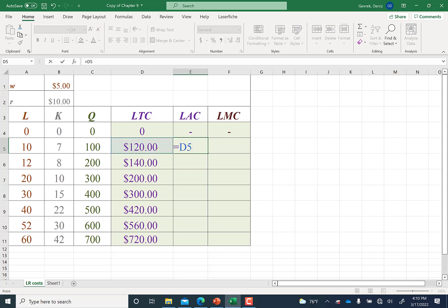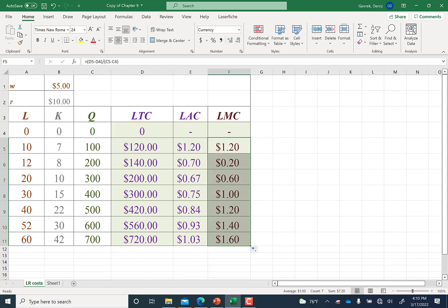Long-run average cost equals long-run total cost divided by quantity. You got this. And then long-run marginal cost: we are going to open a parenthesis, change in long-run total cost divided by change in quantity. Total cost producing 100 units minus total cost producing zero units, and divide it by 100 minus zero. For this we don't need to fix anything; it's ready to go.